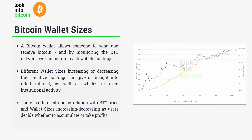To summarize: a Bitcoin wallet allows someone to send and receive Bitcoin, and by monitoring all wallets on the network we can see each wallet's holdings. We can group these into different wallet sizes and chart them on LookIntoBitcoin. As these wallet sizes increase or decrease relative to their holdings, it gives us insights on not only retail interest but also whales, big players, or even institutional activity. There is often a strong correlation with Bitcoin price and wallet sizes increasing or decreasing as users decide whether to accumulate or take profit on their BTC.